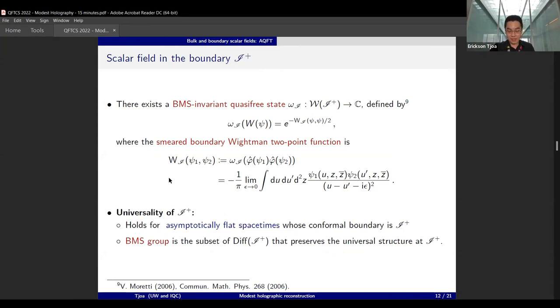This is a universal result that holds for asymptotically flat spacetimes whose conformal boundary is defined by scri plus. We recall that BMS group is also a subset of the diffeomorphism group at the null infinity that preserve this universal structure.